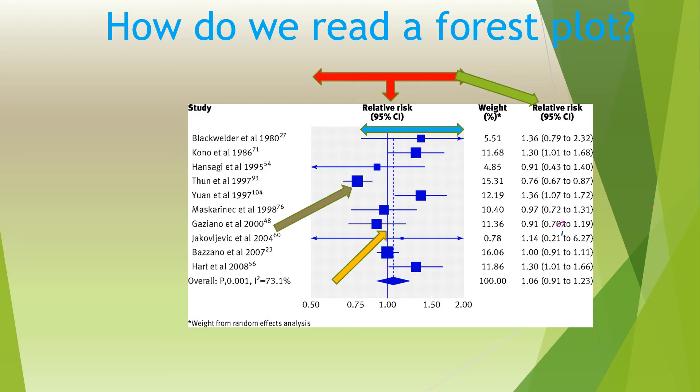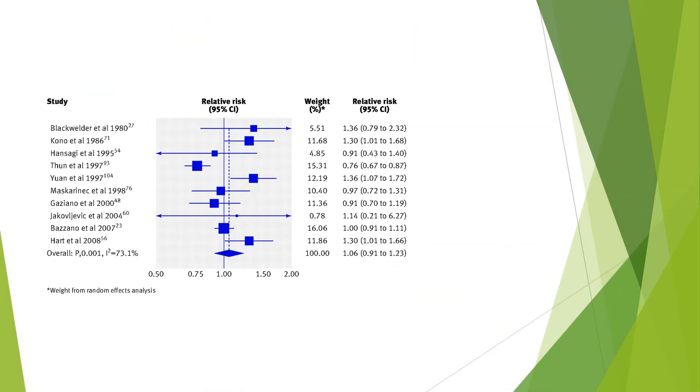An outline of a diamond at the base of the forest plot represents a weighted average for all studies, but may also be an odds ratio. The lateral tips of the diamond represent the confidence interval. If the diamond touches the vertical line, then the overall meta-analyzed result is not statistically significant.